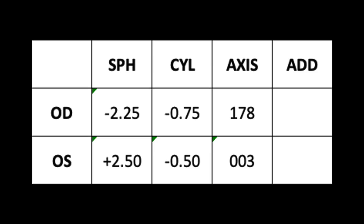To know if you're myopic, you want to look at your prescription. If you look under the first column that says sphere, you're going to see a number and that number is going to have a plus or a minus in front of it. If it has a minus in front of it, that means that you're myopic or nearsighted. A side note: OD stands for right eye and OS stands for left eye. The minus means nearsighted, plus means farsighted.